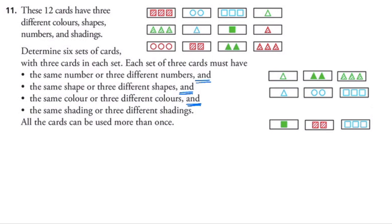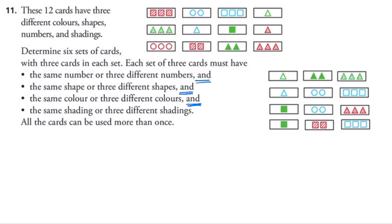Starting again with one green square, let's build another set with three different colors and three different shapes. Looking at cards with two objects, we have two green triangles, two blue circles, or two striped squares. The striped squares were already used. If I pair the square with circles, I'd need three triangles — that card works. If I pair with the two green triangles, I'd need another solid card to get three of the same shading, but I don't have three green solid ones, so that won't work. Using one green square, two blue circles, and three red triangles gives three different numbers, three different shapes, three different colors, and three different shadings — four valid sets so far.